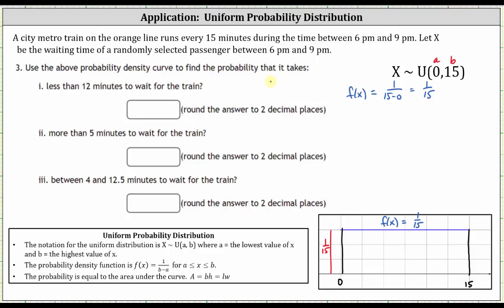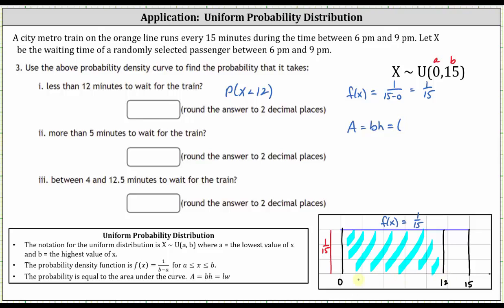Let's first find the probability it takes less than 12 minutes to wait for the train, which is the probability that x is less than 12. The probability that x is less than 12 equals the area under the probability density function from zero to 12. Using area equals base times height: the base is 12 minus zero, which is 12, times the height of 1/15. 12 times 1/15 is 12/15, which simplifies to 4/5, and 4/5 expressed as a decimal is 0.8.